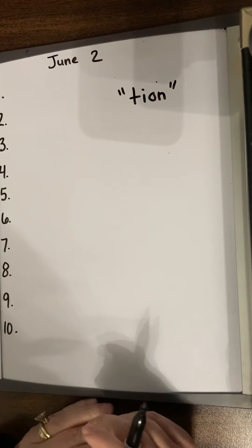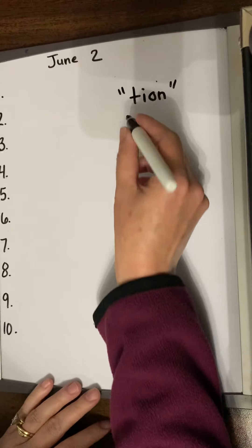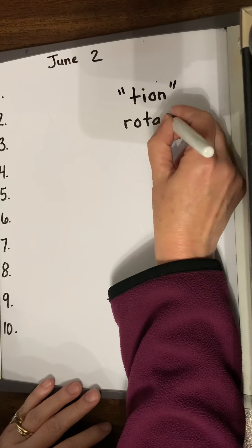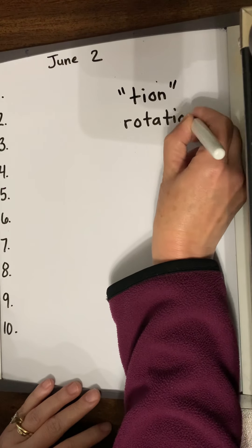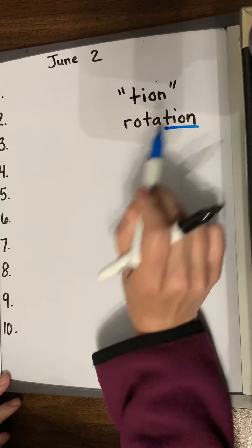For example, if the word was rotation, ro-ta-tion. And there's your shun right there on the end of the word, of rotation.